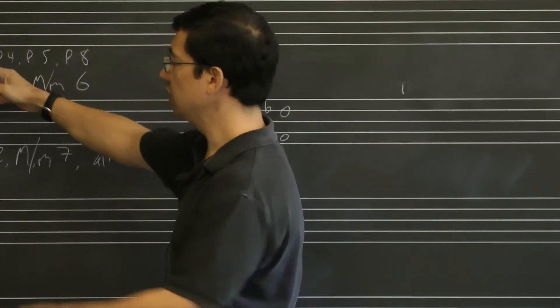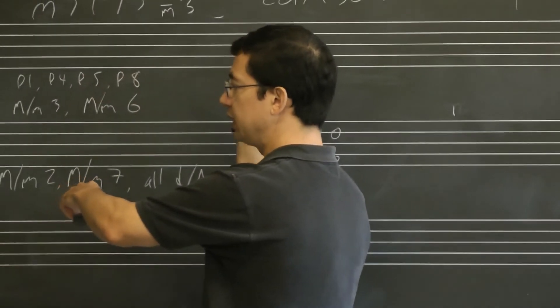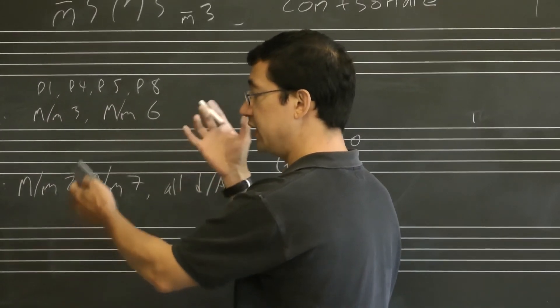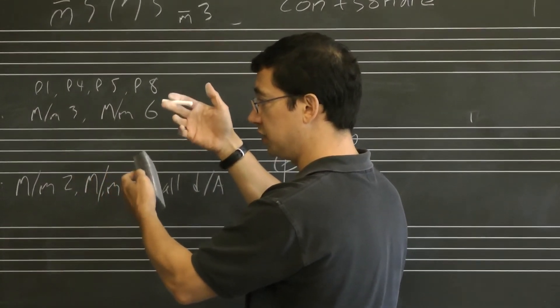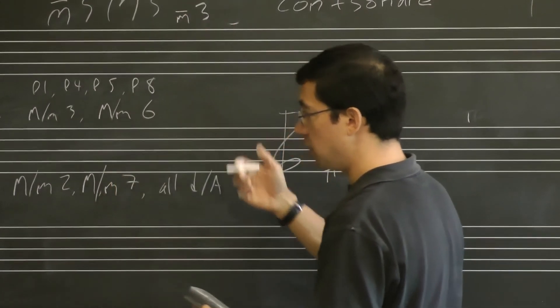So perfect intervals: it's just perfect, make it bigger, augmented; make it smaller, diminished. Major, minor - one major, of course, is larger than minor - make it bigger, augmented; make it smaller, diminished.